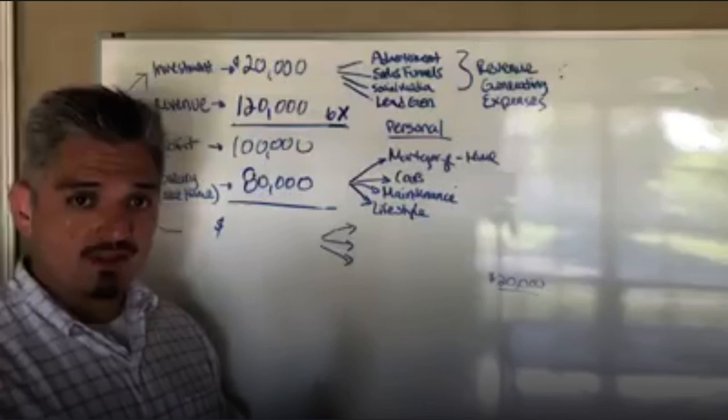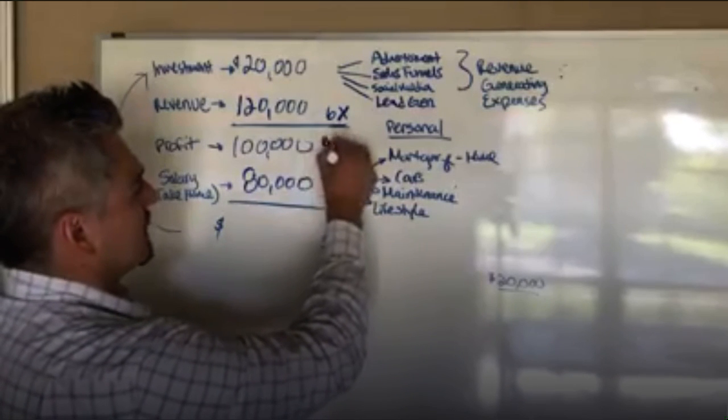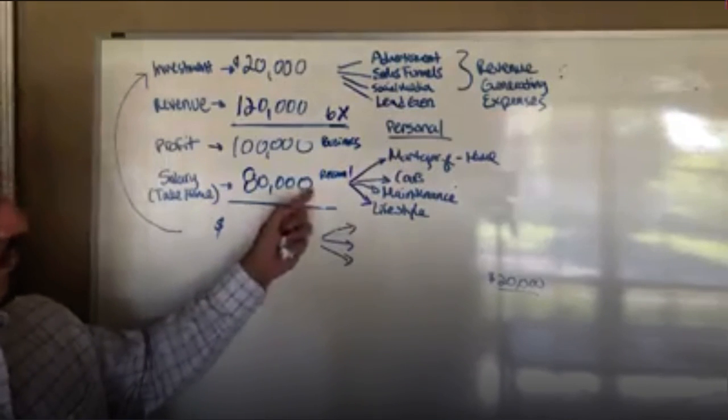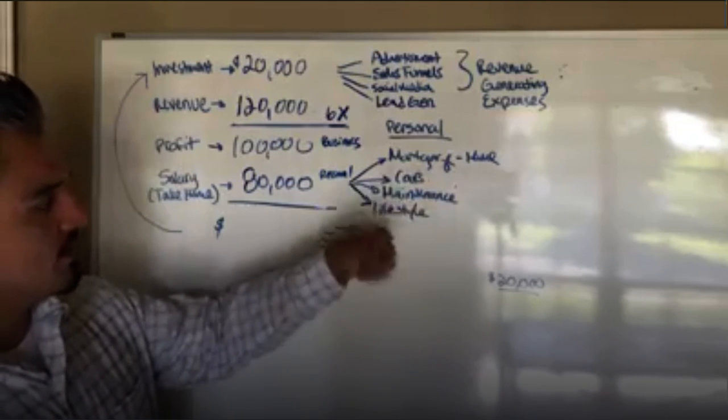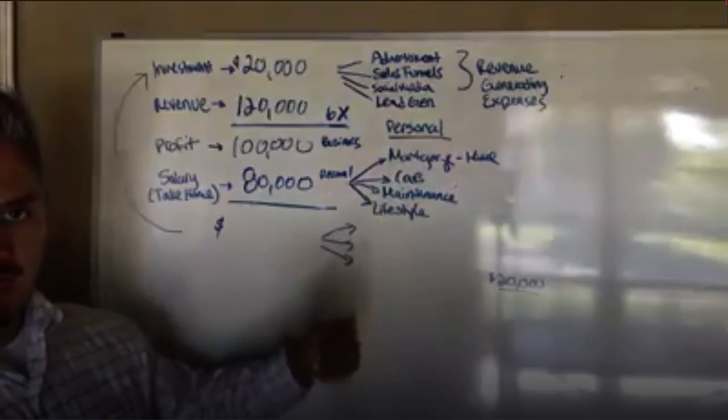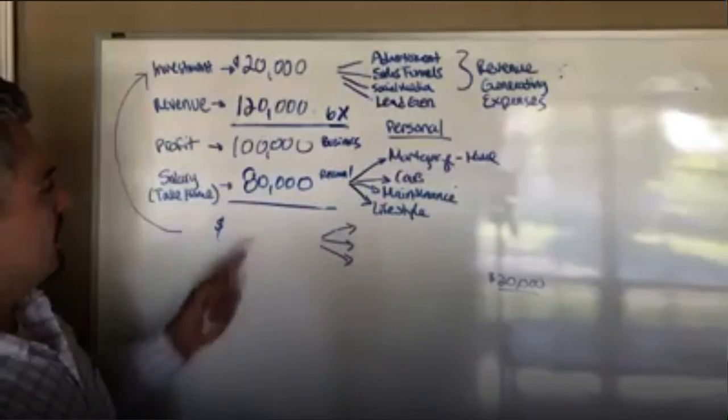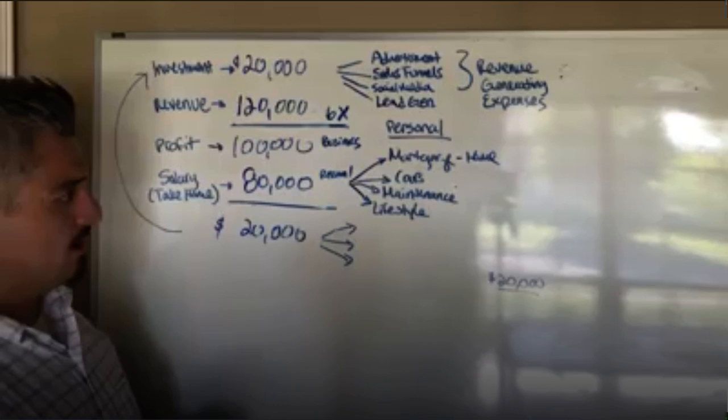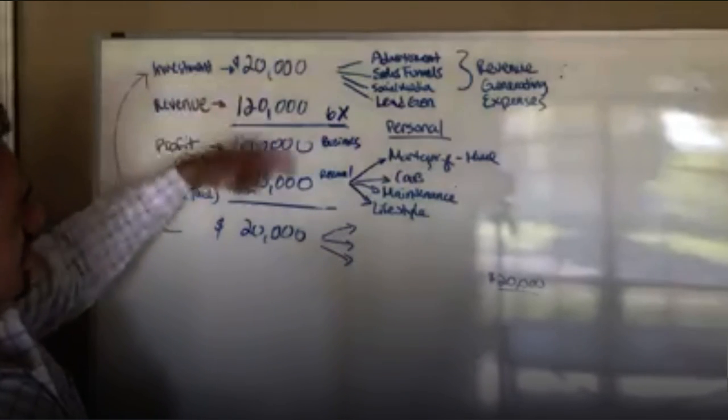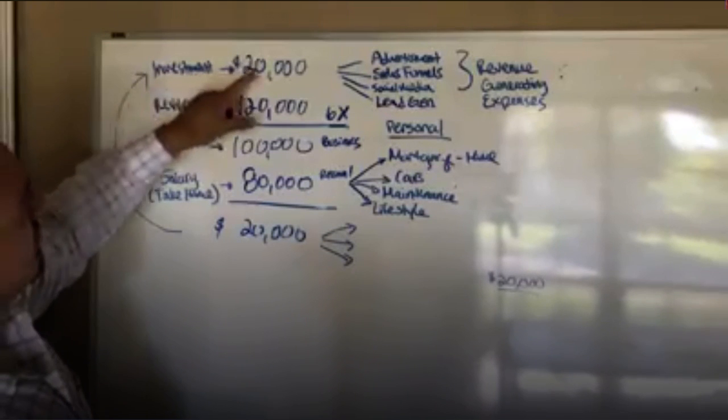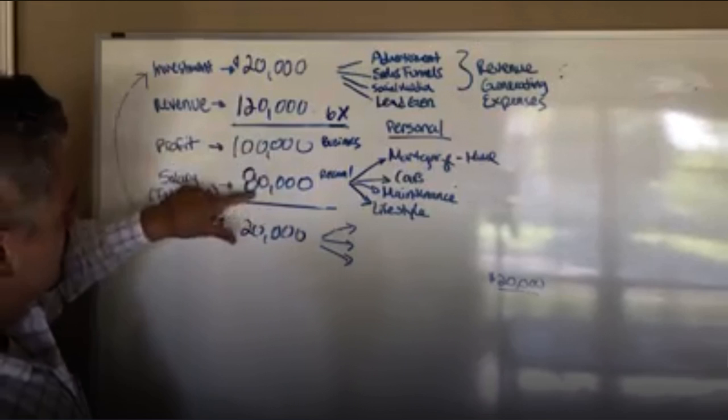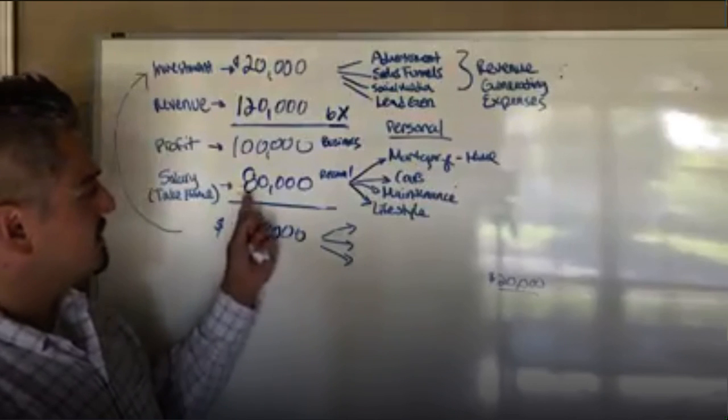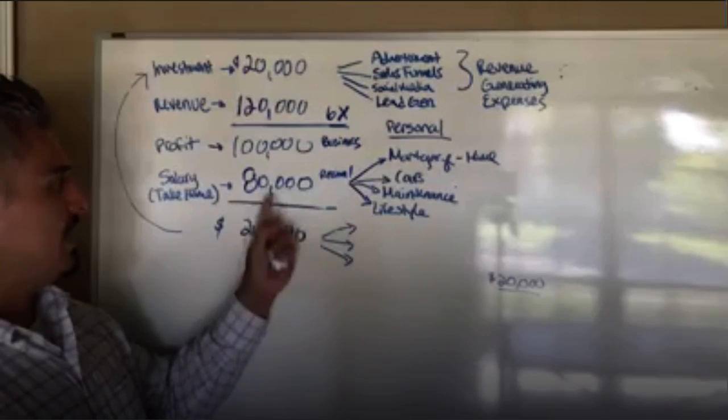Preferably this is out of a business checking account, and this is out of a personal account, to pay your mortgage, your cars, maintenance on your home and your cars, and your lifestyle. So this is a basic example. At the end of the year, I'm not going to include taxes because I didn't want to overcomplicate this basic scenario. Then you go back and you're investing again, producing $120,000, profit $100,000, and you're making about roughly $80,000.